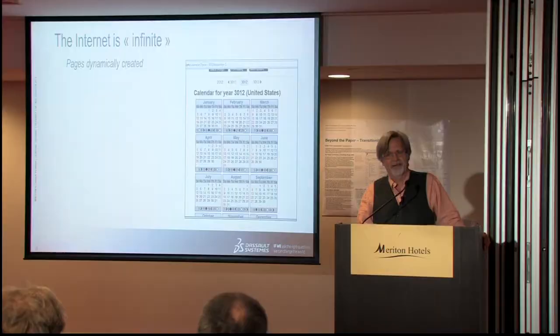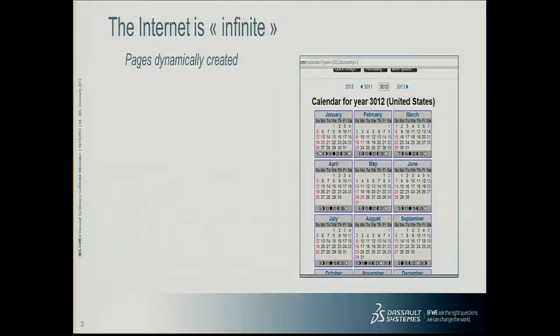If you start in two different parts of the web — if Bing starts in one place and Google starts in another — they won't crawl the exact same pages. Another thing to realize is that there's not a fixed number of pages on the web. It's infinite in the sense that there are pages that can be created once you make the URL. A simple example of that is calendars — pages which will generate a calendar for any date, so that's infinite in time.